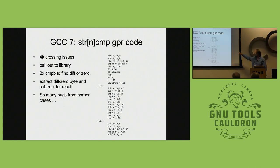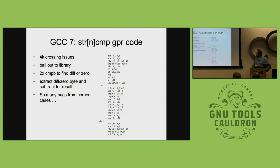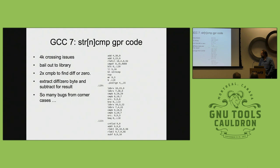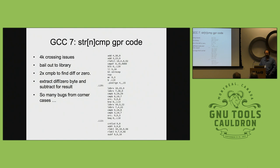Because we don't have a specific string compare instruction for GPRs on Power, you have to do two comparisons: one comparing the two strings to each other, and then compare one of them to zero, then combine those two comparisons to figure out whether you hit either a zero or a difference. You only have to compare one string to zero, because if the first string was not zero but there's a difference, you get that result anyway. The count-leading-zeros trickery is just to figure out which byte is actually different.